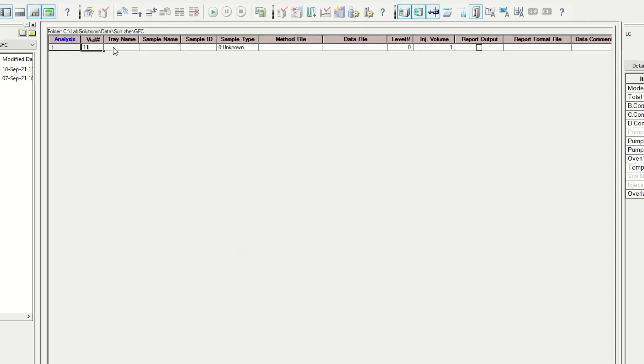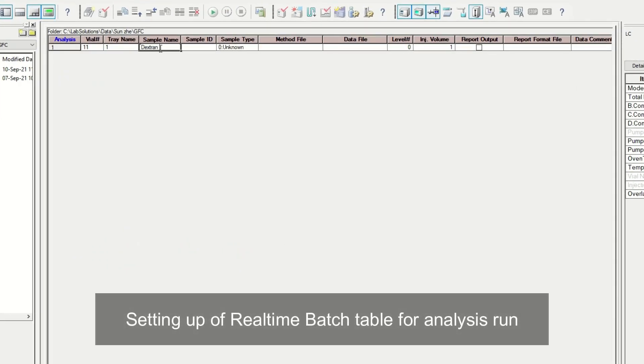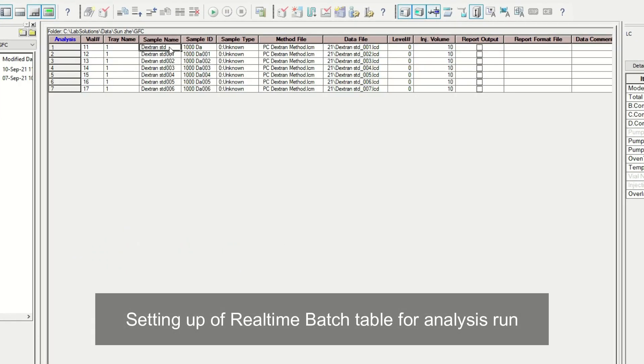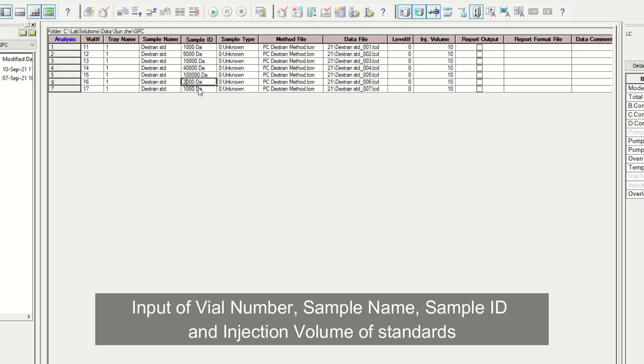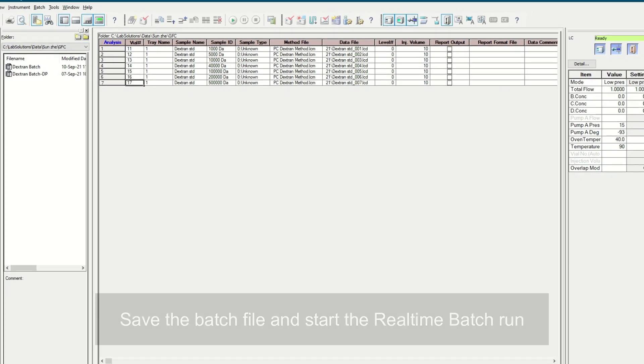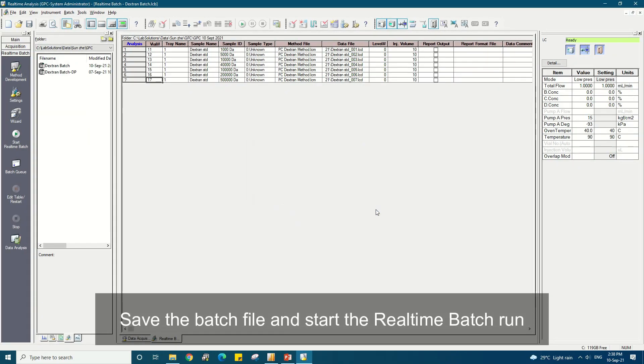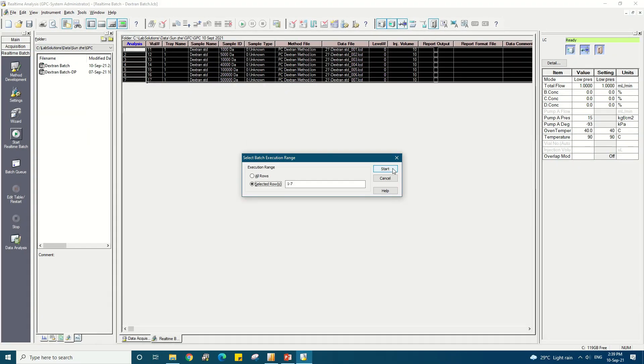After we create a method file, a batch table is set up to allow for the analysis of multiple standards, including all the different molecular weight polymer standards. Input all the relevant information such as the sample name and sample ID for easy identification of each standard. After saving the batch file created, start the real-time batch run.